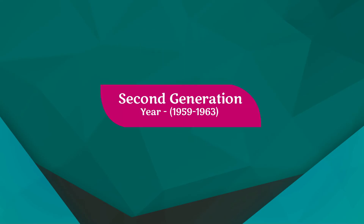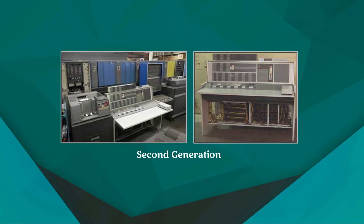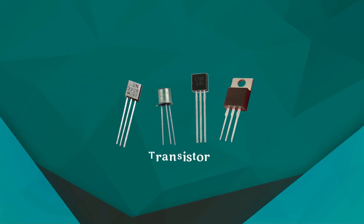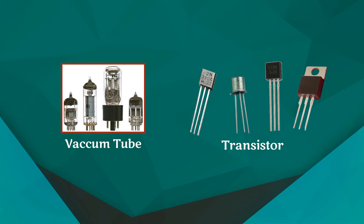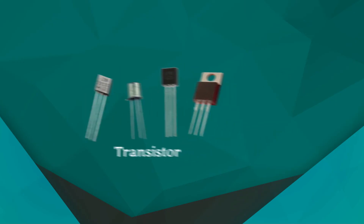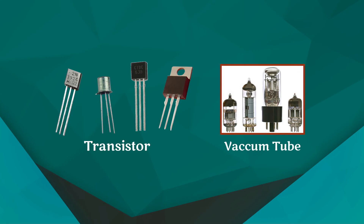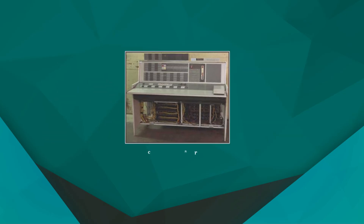Second generation: year 1959 to 1963. As development moved further, the second generation computers arrived. In this generation, transistors were used as the electronic component instead of vacuum tubes. A transistor is much smaller in size than a vacuum tube. As the size of electronic components decreased from vacuum tubes to transistors, the size of computers also decreased and became much smaller than earlier computers.